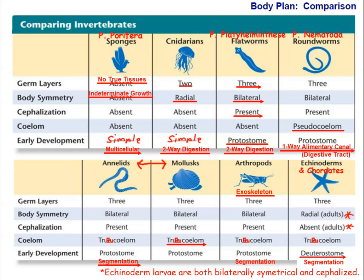Last time we were looking at body plan, and this table summarizes the body plans phylum by phylum and compares them. We're going to look at evolutionary trends, and this table also shows evolutionary trends in terms of different characteristics of body plan. The first thing to note is what we're talking about when we discuss body plan — it's these components together that describe the body plan of an animal.